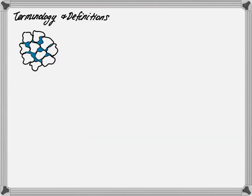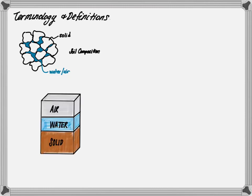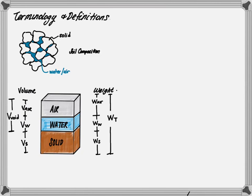Remember, the ground is made up of soil, solids, air, and water — this is the soil composition. We can break this up and create a diagram that separates the air, water, and solids. In a laboratory, we can determine the weight of each of these substances: the weight of air, the water, and the solids. Remember, the weight of air is zero. Together, this gives us the total weight. The volume can also be determined: the volume of air, the volume of water, and the volume of solids. The volume of air and water together is also referred to as the volume of voids.